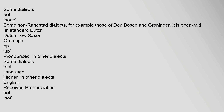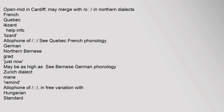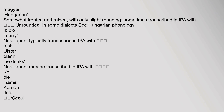Some Dutch dialects, for example those of Den Bosch and Groningen, have an open mid realization in standard Dutch. In Dutch Low Saxon Gronings, it is pronounced differently in other dialects. In English Received Pronunciation, it is somewhat raised; younger RP speakers may pronounce a closer vowel. In Northern English it may be somewhat raised and fronted. In South African English it is near back and weakly rounded; some younger speakers may have a higher, fully unrounded vowel. In General American, the vowel in 'thought' is open mid in Cardiff and may merge with O. In Northern dialects, French, and Quebec varieties, this vowel also occurs.